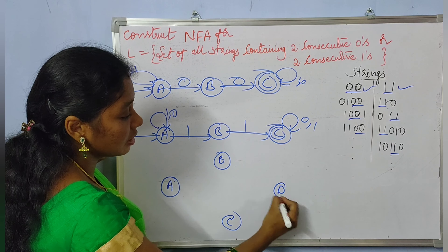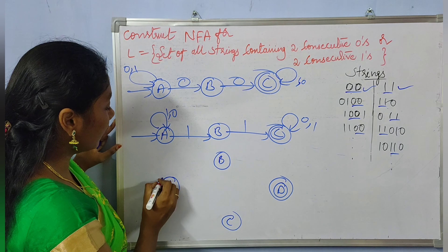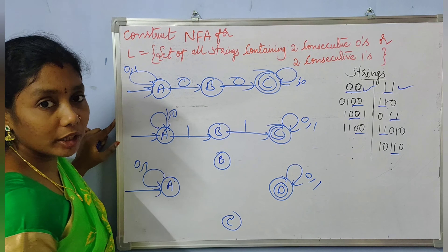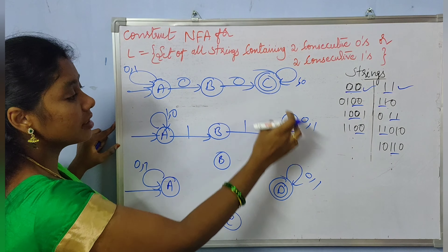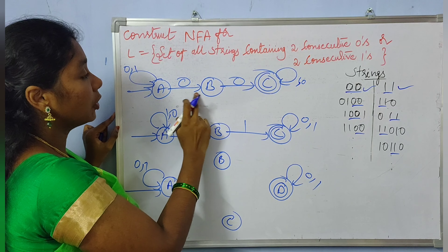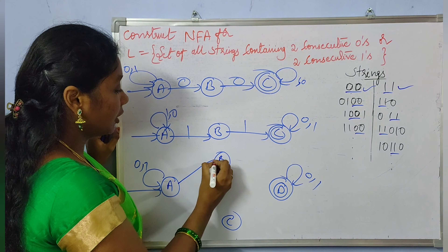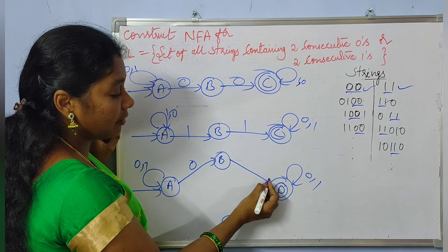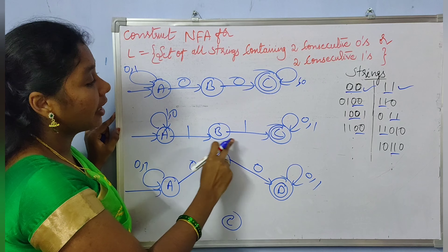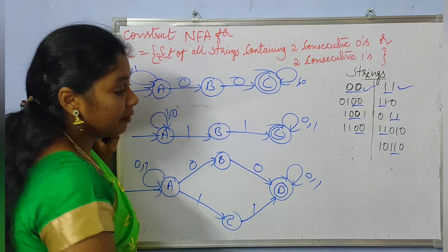We have two intermediate states — call them C and D — along with a combined initial state and a combined final state. From the initial state, with input 0, it goes to the first intermediate state, and again with 0 it goes to the final state. From the initial state, with input 1, it goes to the second intermediate state, and again with 1 it goes to the final state.